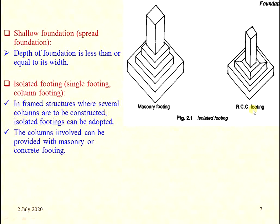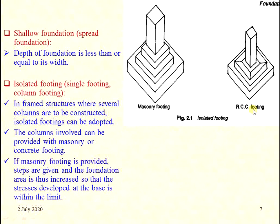Columns can be provided with masonry or concrete footing. If masonry footing is provided, steps are given and the foundation area is increased so that stresses developed at the base remain within the limit. In masonry footing, the base is greater than the column area because the load coming from the upper side is equally distributed to the foundation bed.